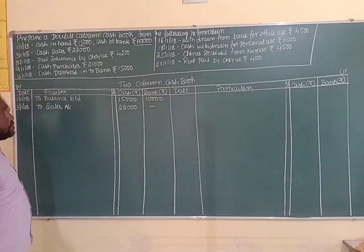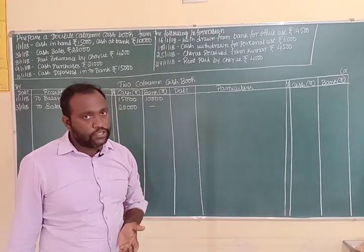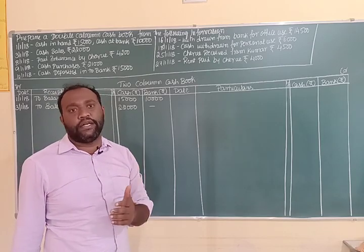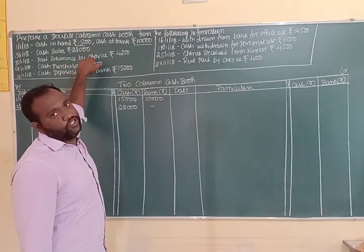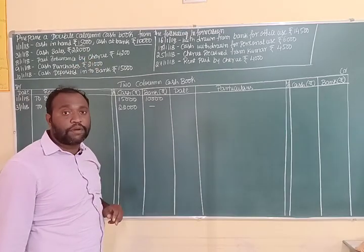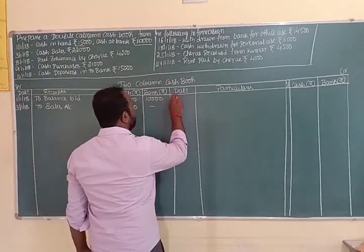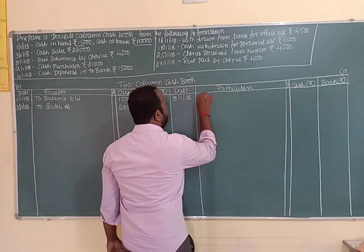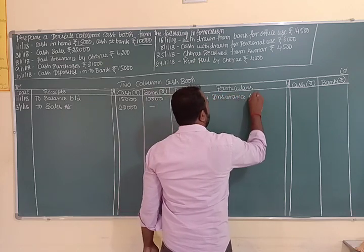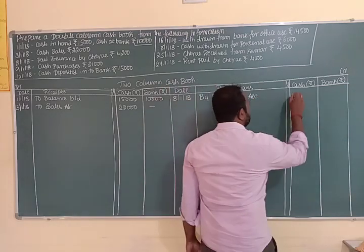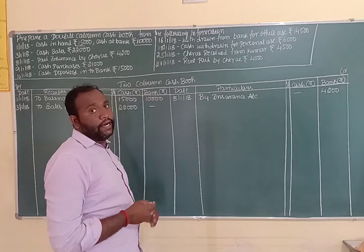On 8th January 2018, insurance paid by cheque. The journal entry will be: insurance account debit to bank account, because payment was made by cheque. We record 'By Insurance Account' on the credit side, entering rupees 4,200 in the bank column.